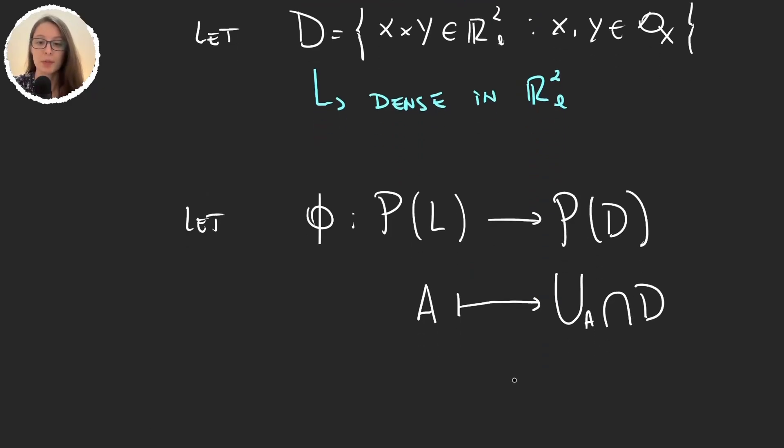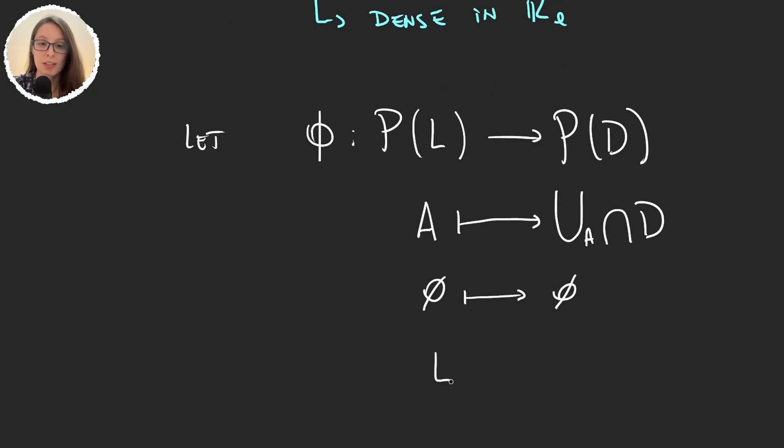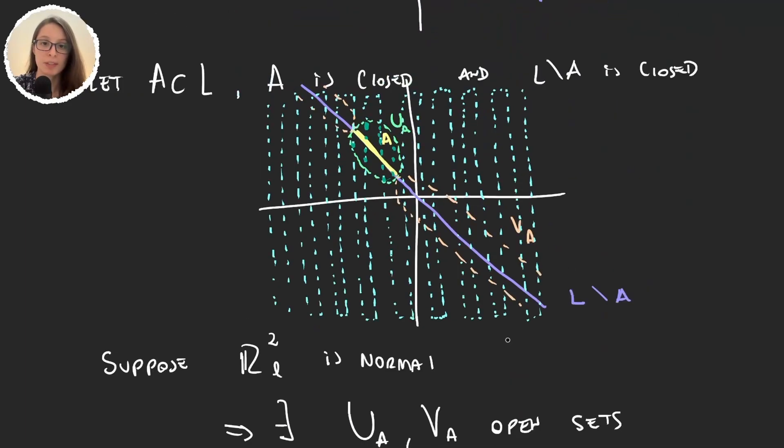So that this function can be well defined, we will say that it will be the empty set to the empty set and to the set L it will map D. So the function evaluated in the whole line L will give us all the points in the plane with rational coordinates. So the idea would be to reach an absurd, but it might not seem very clear so far how we will get it. But the thing is this function is injective.